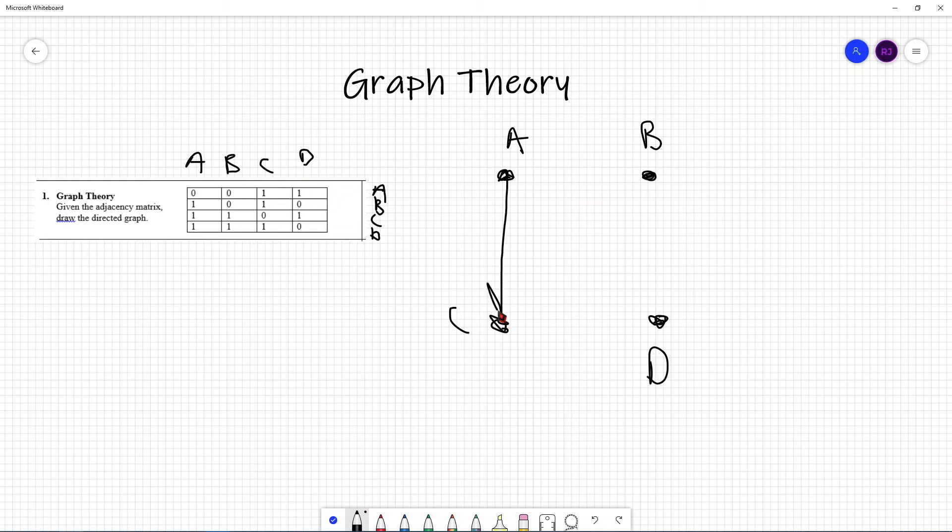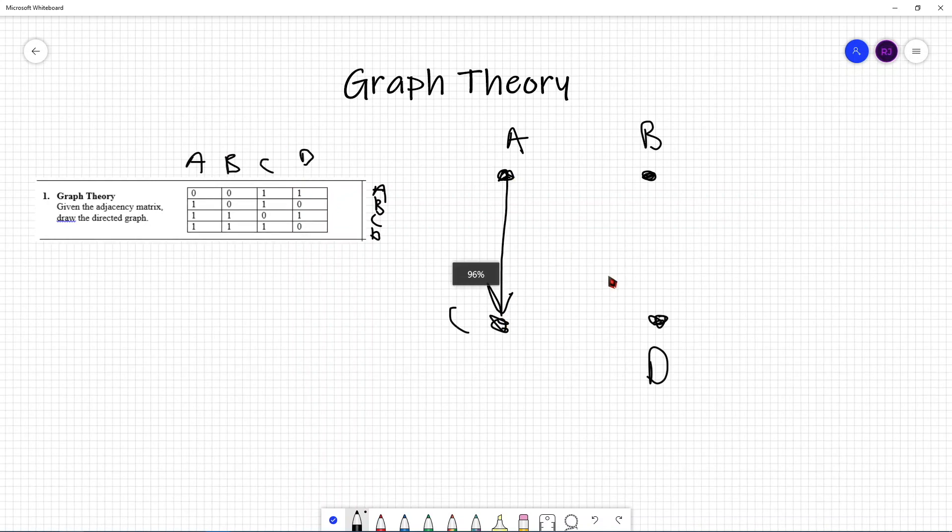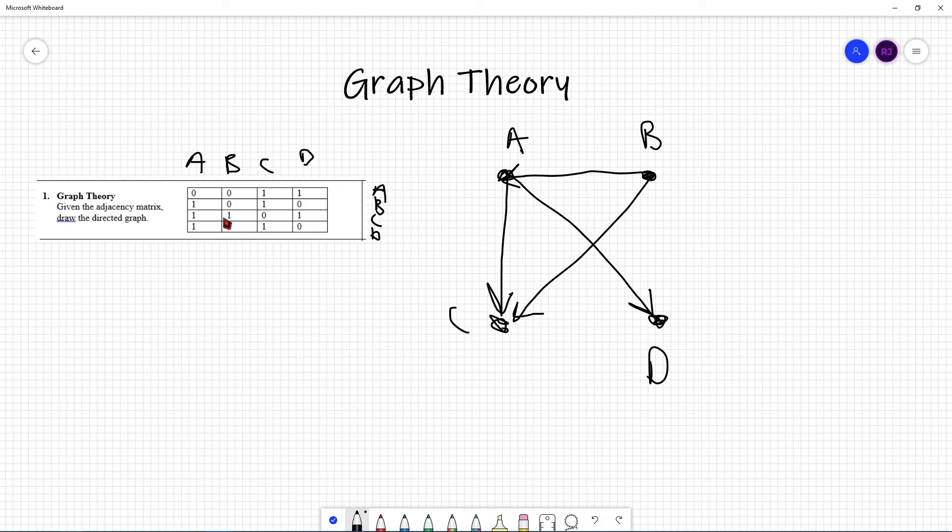So, let's draw an arrow here, and let's draw an arrow right here. B has a connection to A, so let's draw that. B also has a connection to C, so let's draw that. C has a connection to A, B, and D.